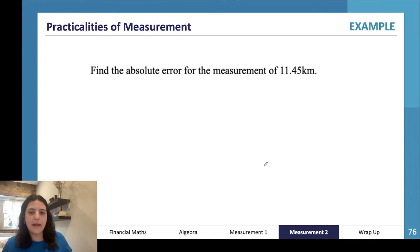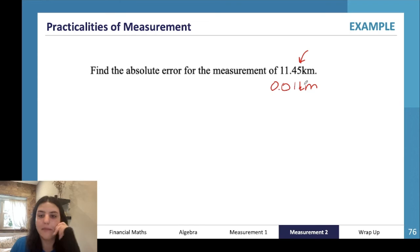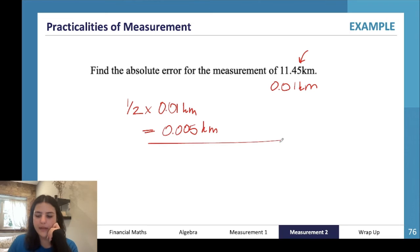Okay, find the absolute error for the measurement of 11.45 kilometers. We're looking for our smallest part of the measurement, so we're going to 0.01 kilometer, which is 10 meters, because this would be 100 meters. So the absolute error is going to be half times 0.01 kilometers, which should be equal to 0.005 kilometers, so 5 meters.